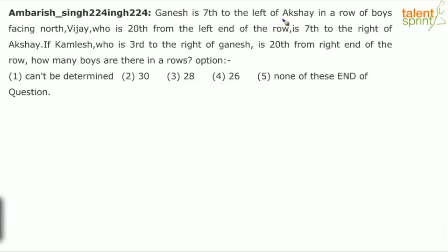The question says: Ganesh is 7th to the left of Akshay in a row of boys facing north. Vijay, who is 20th from the left end of the row, is 7th to the right of Akshay. If Kamlesh, who is 3rd to the right of Ganesh, is 20th from the right end of the row, how many boys are there in the row?